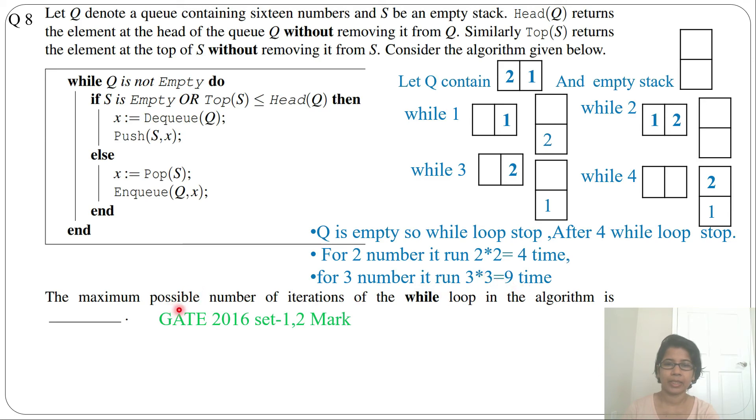And for 16, so 16 multiplied by 16, it will be 256. So answer will be 256. If you have still doubt, just take 3 elements in a queue. And it should be in decreasing order, then only you will get maximum. So here answer is 256. Thank you.